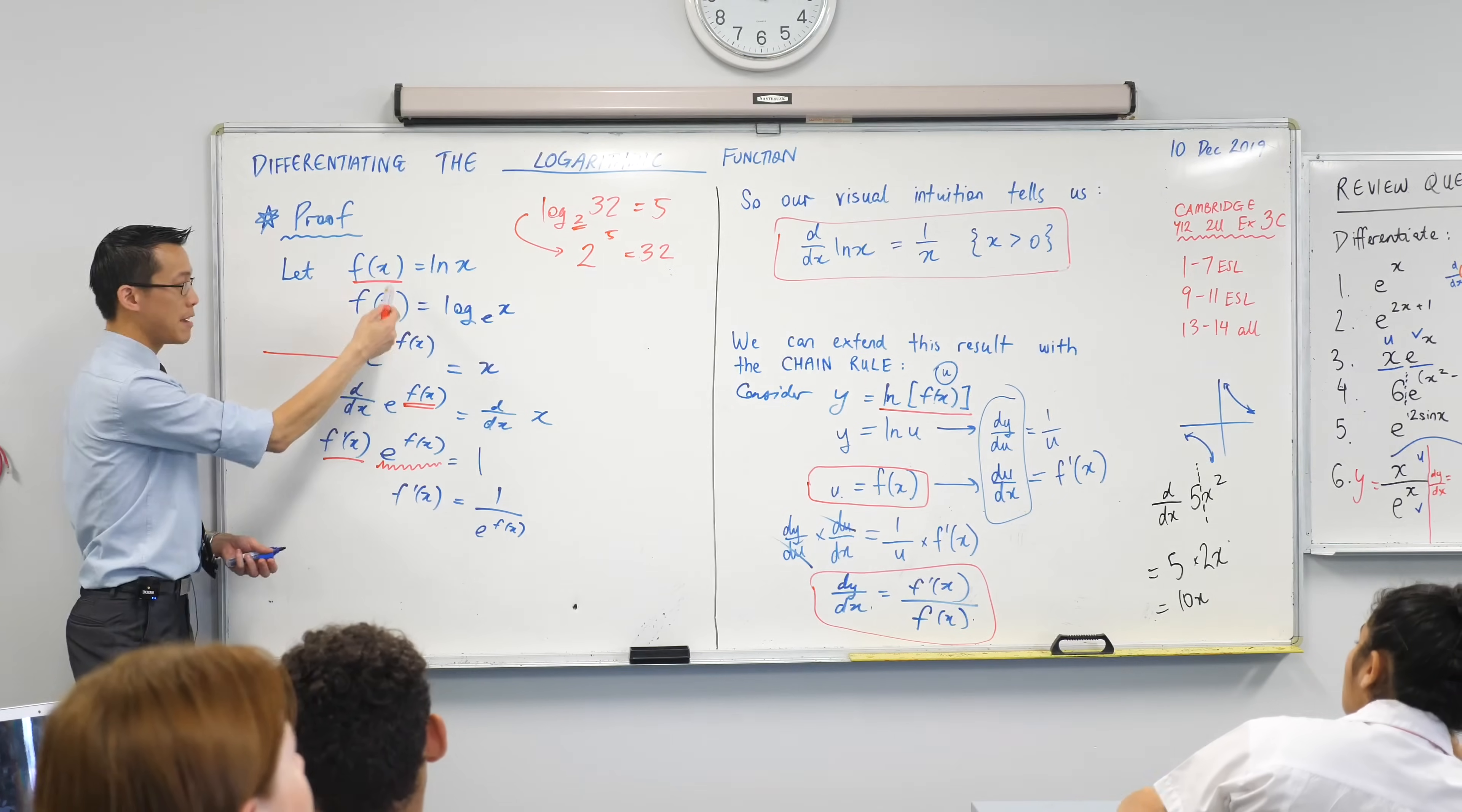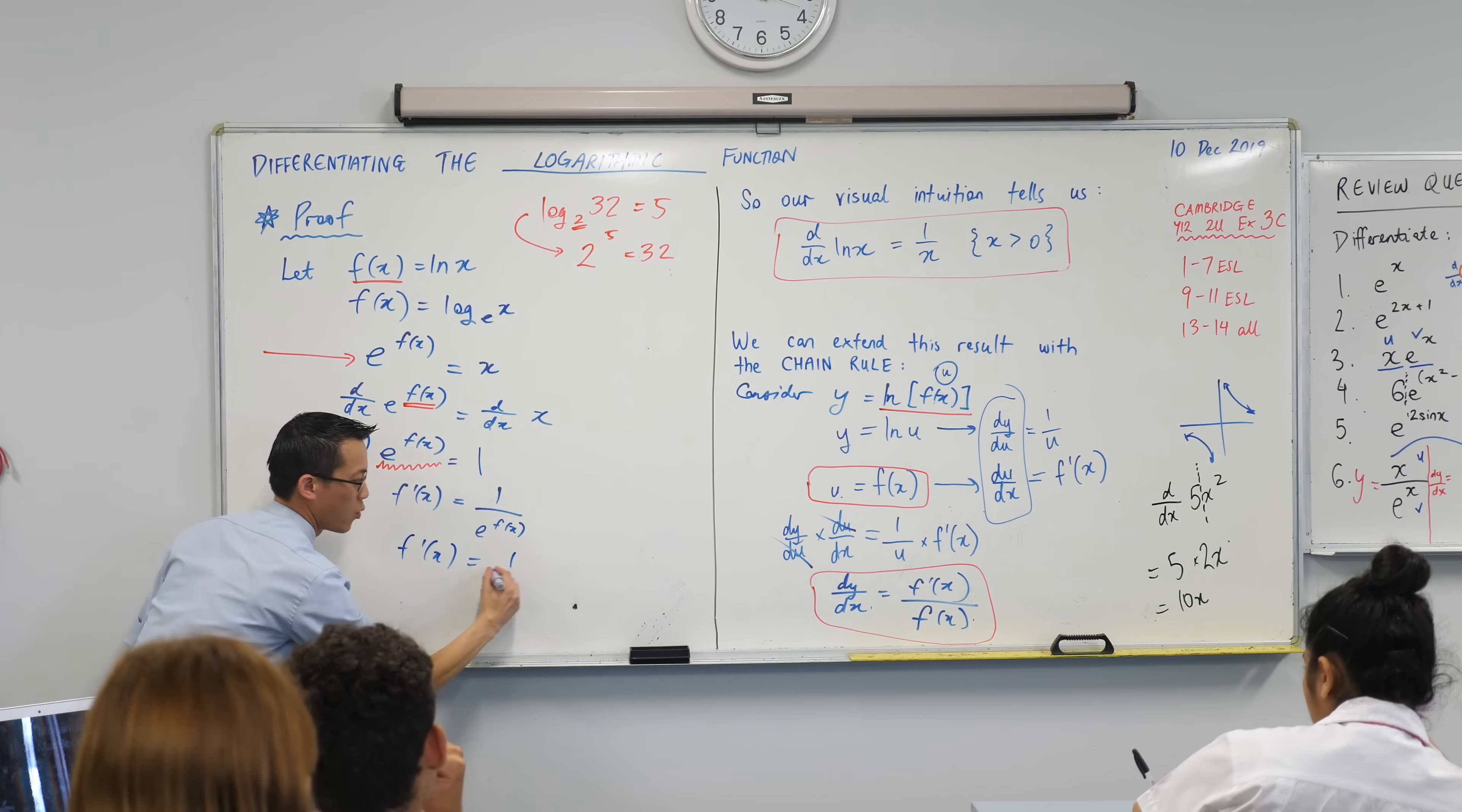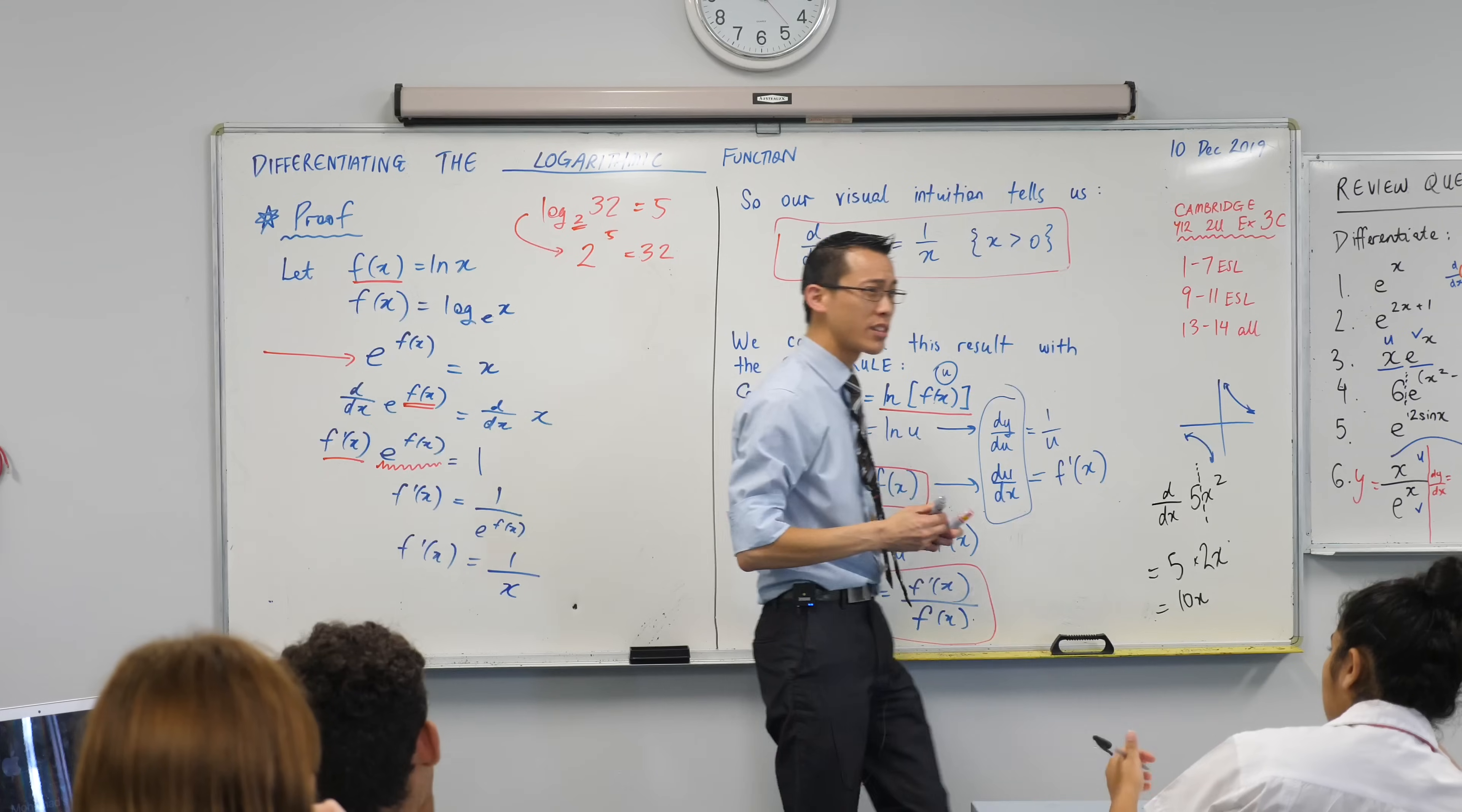So therefore f dash x, what's it equal to? It's 1 over x, which is what we sort of guessed at before when we looked at the picture.